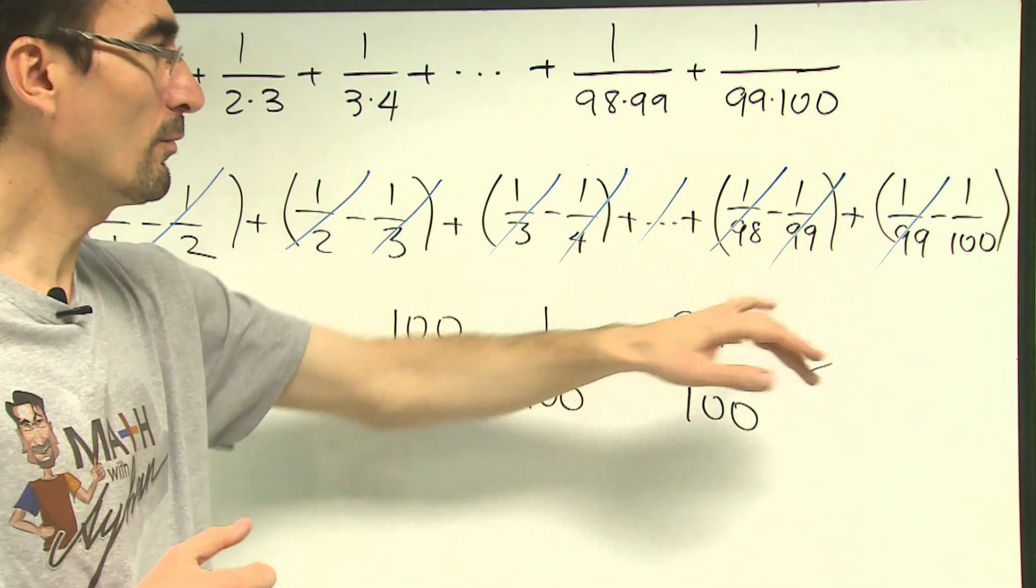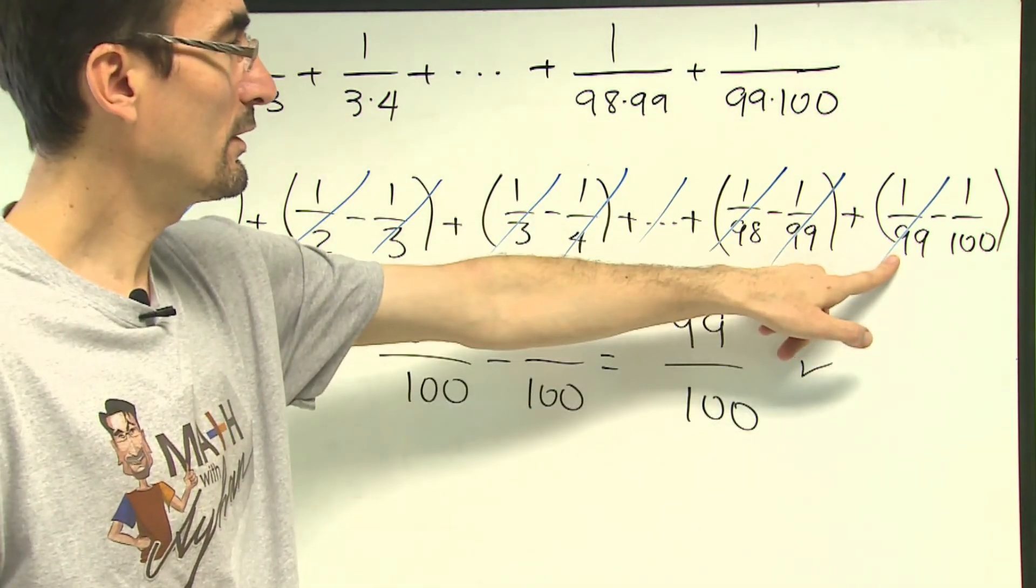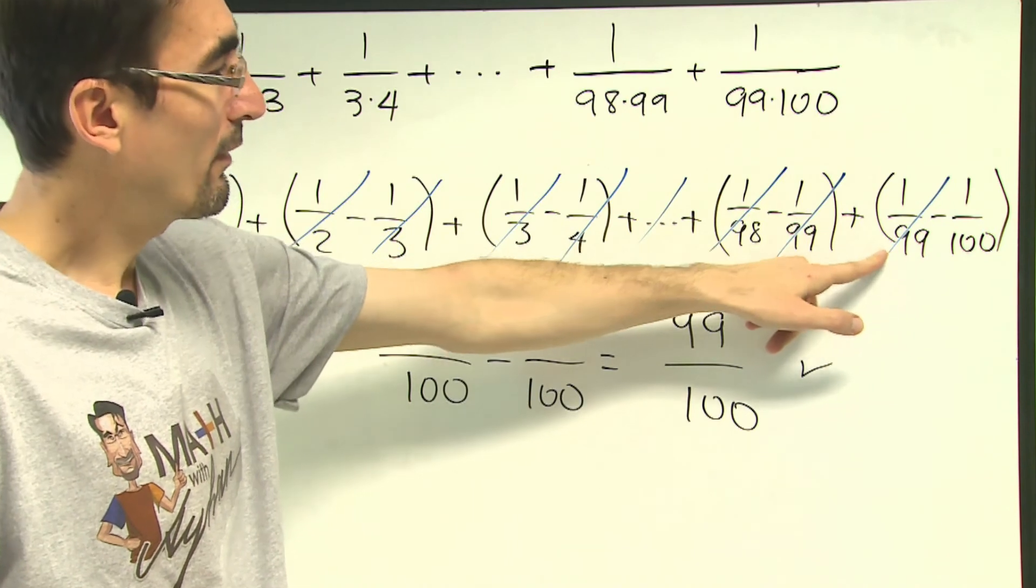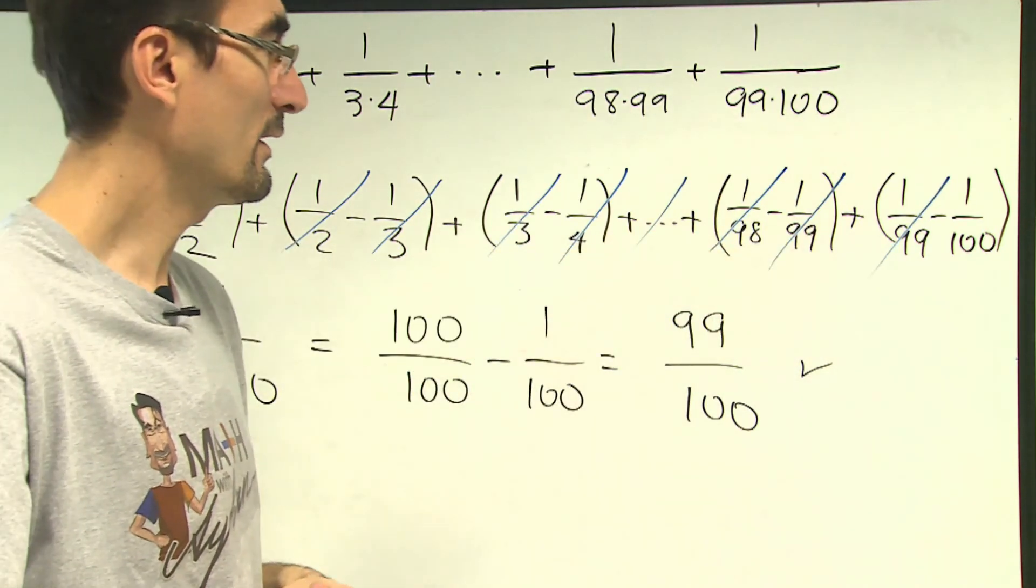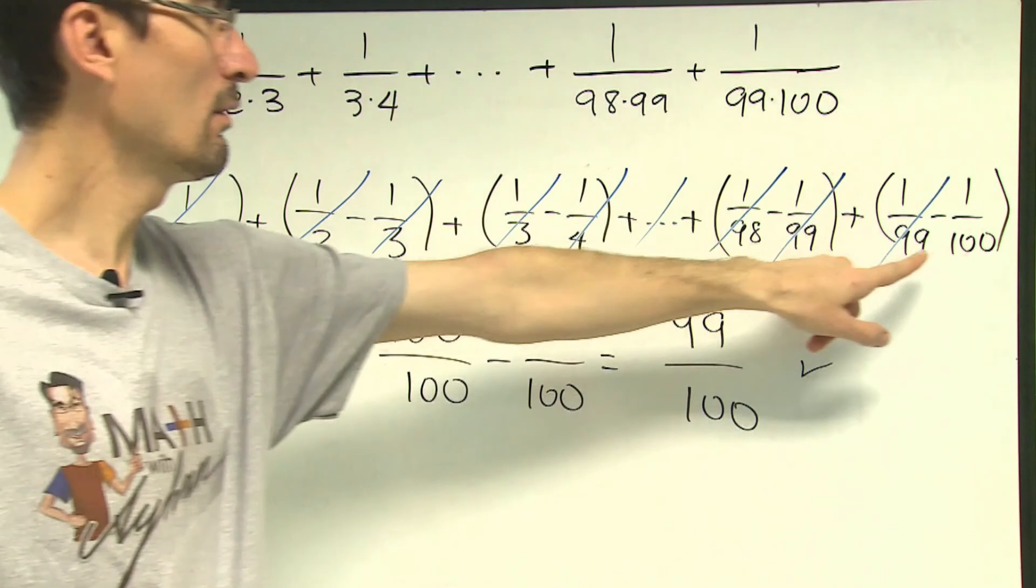All the way to the last term being actually cancelled out would be 1 over plus 99 with negative 1 over 99. So in the end, what we are left with would be our very first same term which is 1 over 1 and 1 over 100.